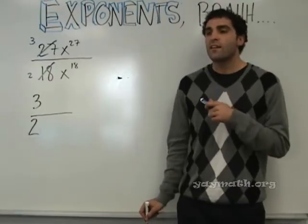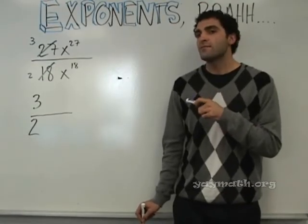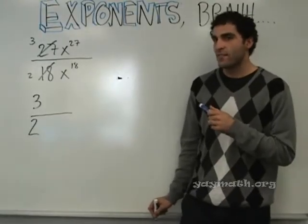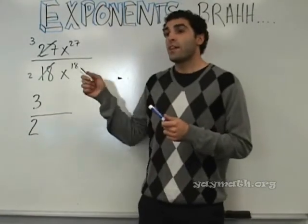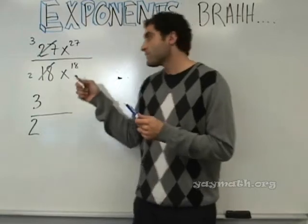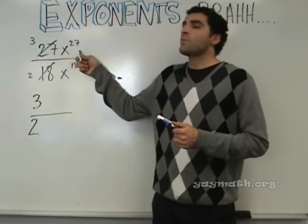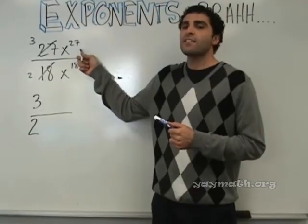Just x to the ninth. X to the ninth. Correct. Here's a way of seeing. 18 x's here will cancel with 18 x's here, leaving nine.